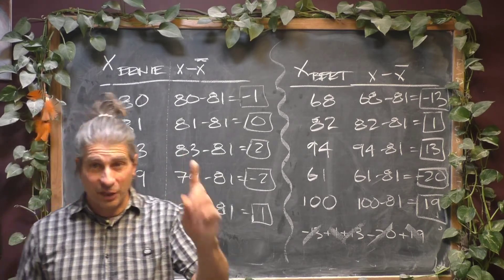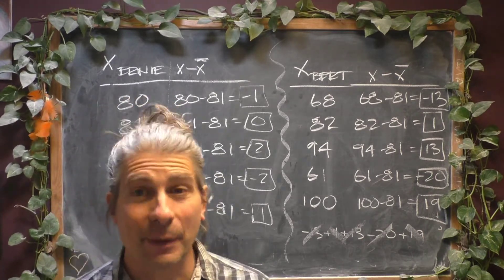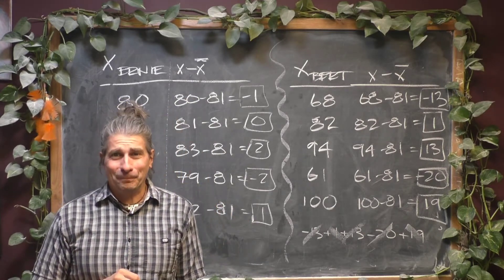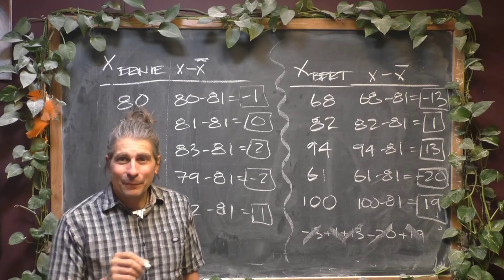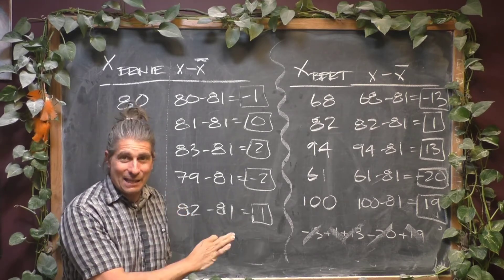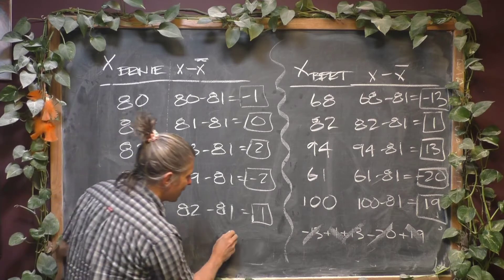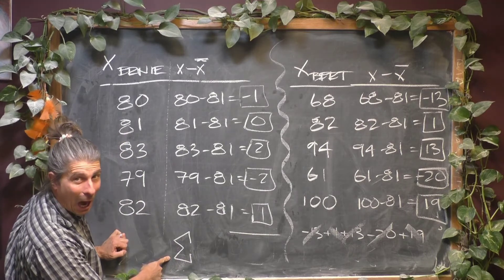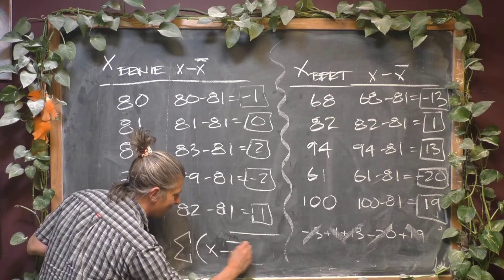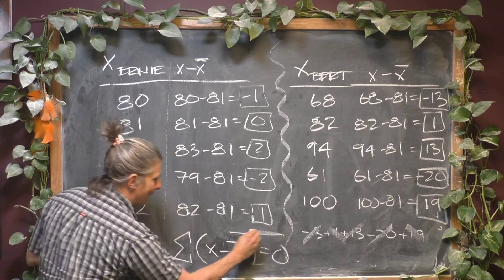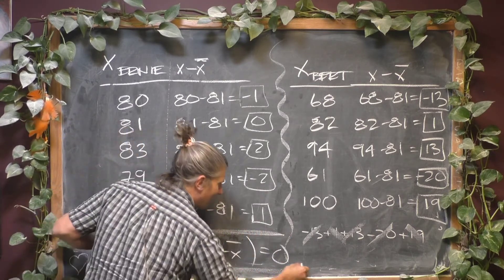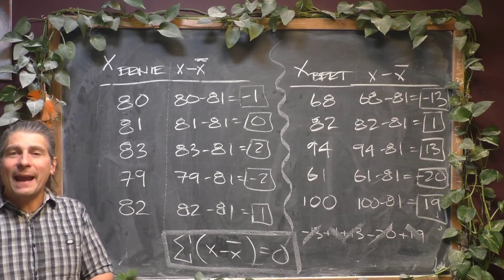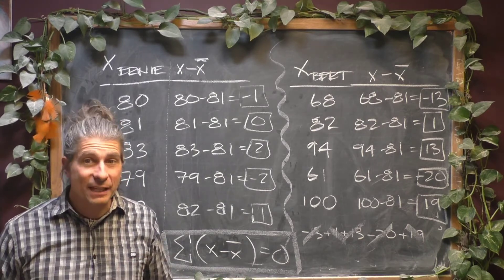Now, the first thing I want you to do is I want you to think about that. I'm going to ask you about that later. The next thing is this creates a problem because if no matter what the data set is, if this happens, then if we try to sum up the deviations from average, if it always equals 0, then we can't use that as a measure of deviation. Because it's going to make every data set look like it has 0 deviation.